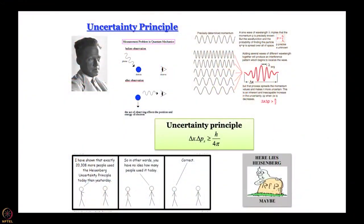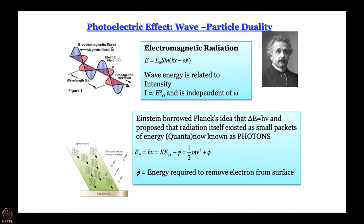In this module, we will try to understand the wave nature of matter, and it sounds quite maddening because it is very difficult to believe that matter can have wave nature. But the uncertainty principle was the last nail in the coffin of Bohr theory, so a deterministic approach to describing atomic structure is clearly not going to work. In the photoelectric effect, the wave-particle duality of light was already established, so the question was: does such a duality exist for matter as well?